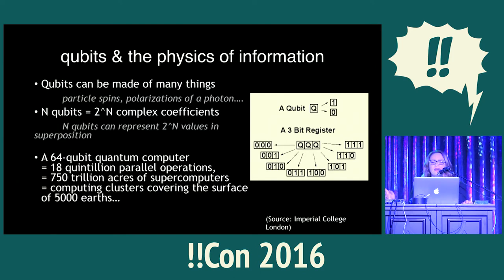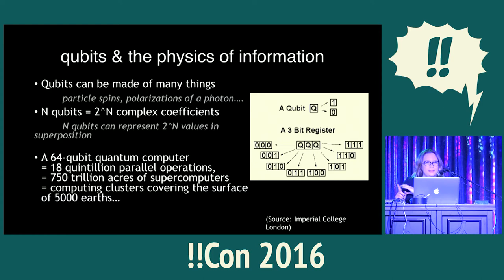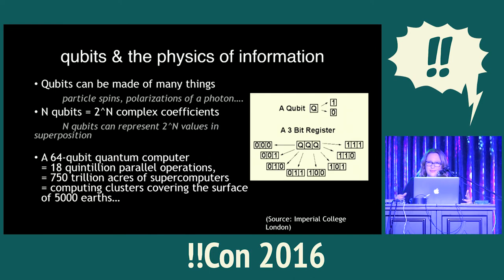Looking at the diagram, you have a three-qubit register with values zero, one, zero, one, zero, and one. You can actually represent 2^3 values — in binary digits, you can get eight. This is kind of interesting with three qubits, but it quickly scales.